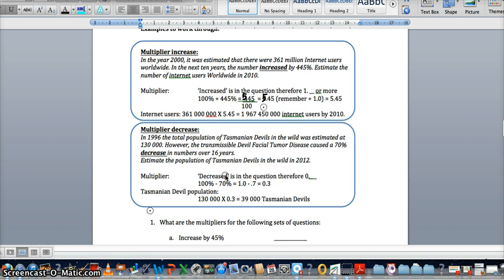Then all we do is do the multiplier, 5.45 multiplied by our original population. It gives us 1,967,450,000 internet users by 2010. This thinking is the process that's very important.